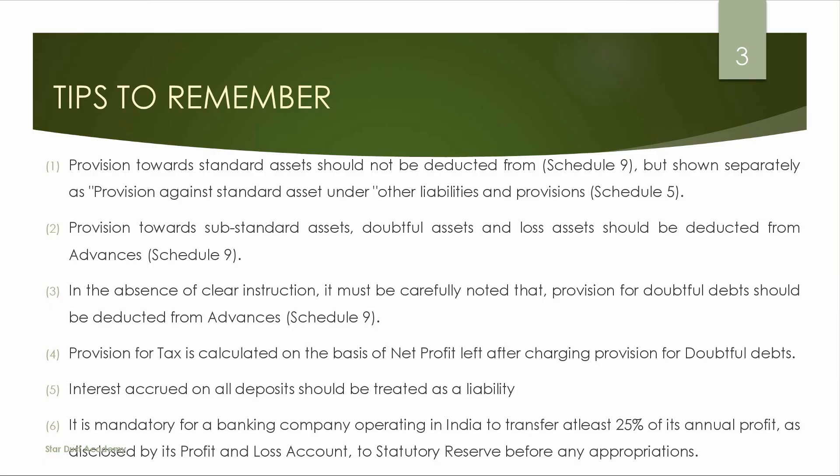The next point: interest accrued on all deposits should be treated as a liability. It is mandatory for a banking company operating in India to transfer 25% of annual profit as disclosed by the profit and loss account to Statutory Reserve before any appropriation. The current year's 25% of profit is transferred to Statutory Reserve before other appropriations.